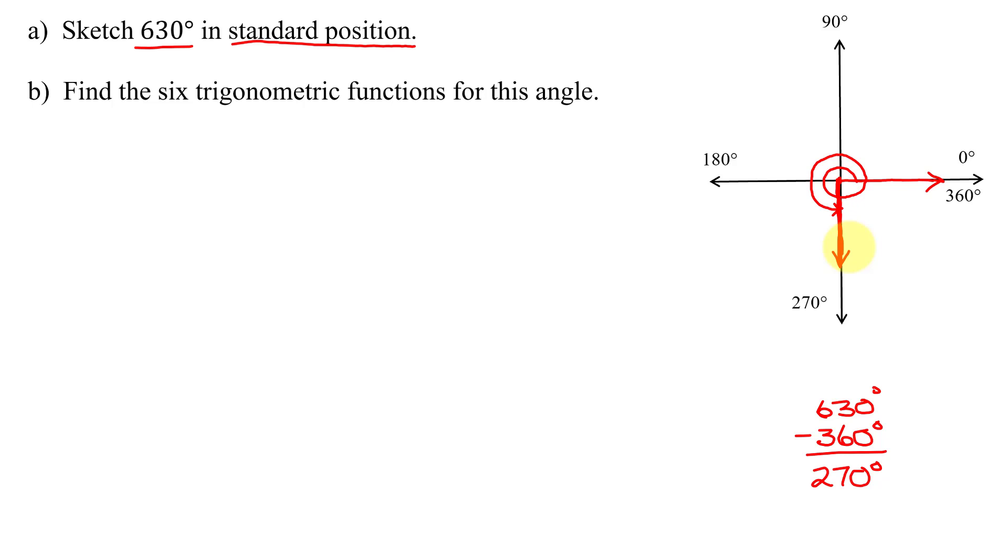So this angle does not lie in a quadrant. It's called a quadrantal angle. So this is 630 degrees drawn in standard position. Now in part B, I need to find the six trig functions for this angle.